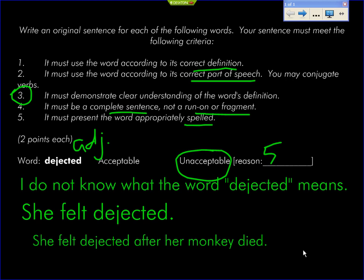That should be satisfying. You see the point. The phrase 'after her monkey died' provides context clues indicating that something tragic happened to this person. It helps me understand that 'dejected' means sad, depressed, a feeling of isolation and depression. That helps me understand. If you just stop with 'she felt dejected,' you would earn one out of two points — you wouldn't earn zero credit. This example would earn two out of two.